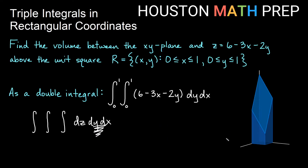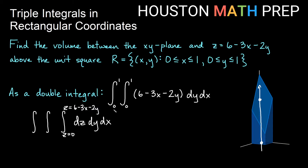If we fix some x and y value — some point (x, y) — and draw through in the increasing z direction, we enter our domain at the xy plane and exit at the top surface. Entering the region is our lower bound and exiting is our upper bound. The xy plane at the bottom gives us z equals 0 as the lower bound, and coming out at the top gives us z equals 6 minus 3x minus 2y as the upper bound.